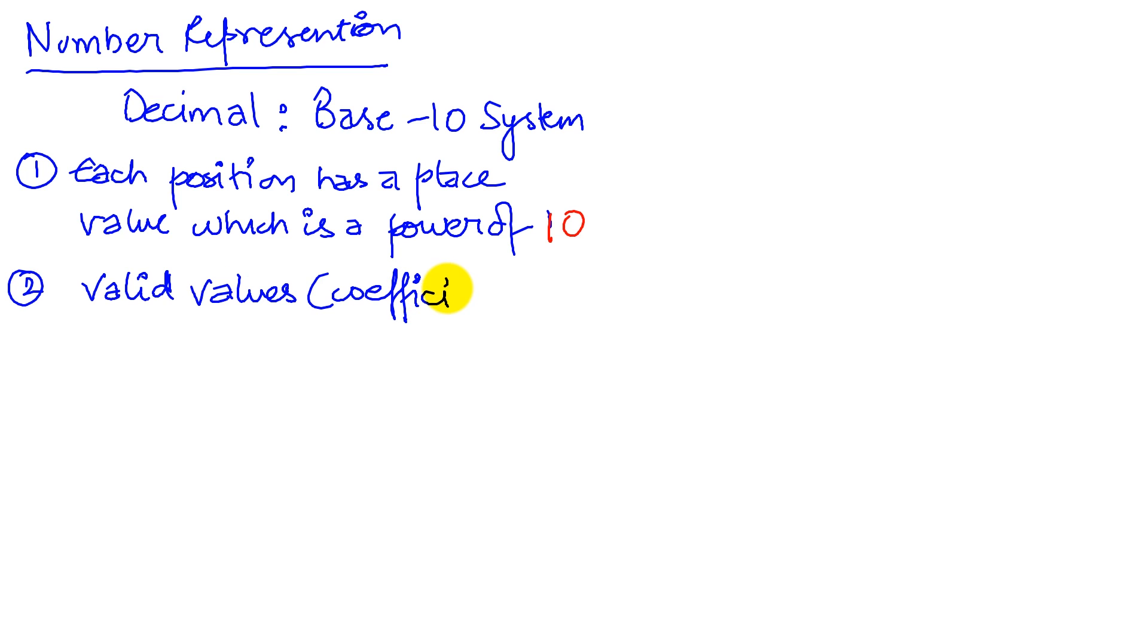In the case of the base-10 system, the valid values are 0, 1, 2, 3, 4, 5, 6, 7, 8, and 9.